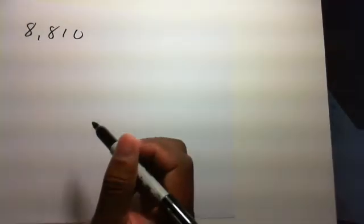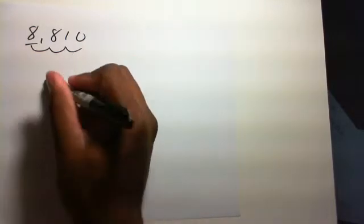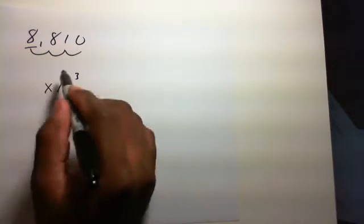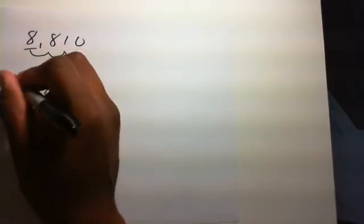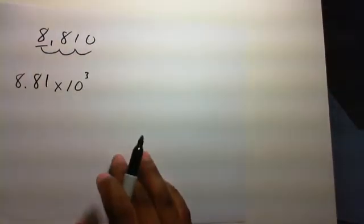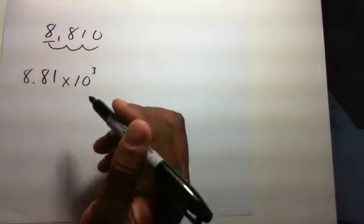We'll grab another piece of paper and do another example. And this number. Same thing. 1, 2, 3. So we know it's 10 to the third. And since we're moving to the right, we know it's positive. And we put the 8.